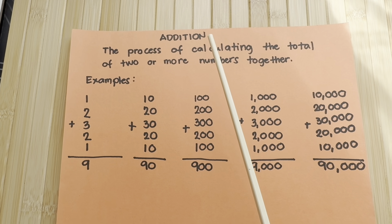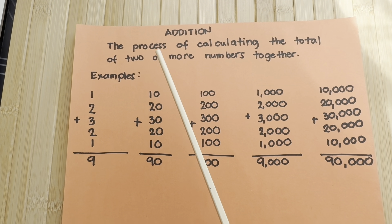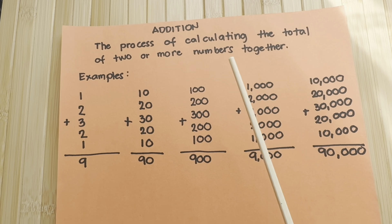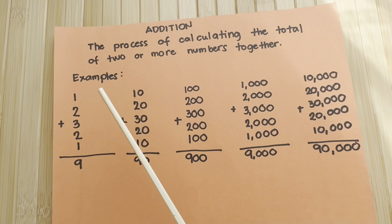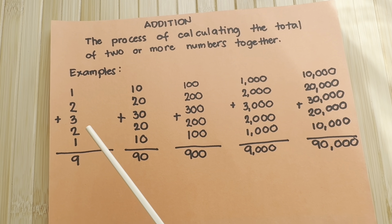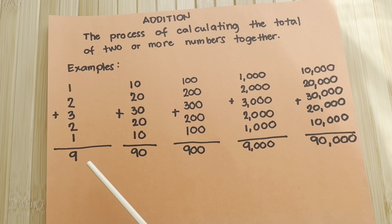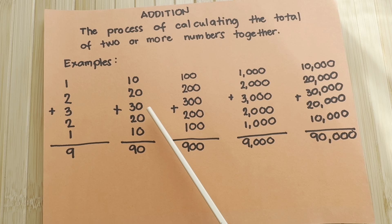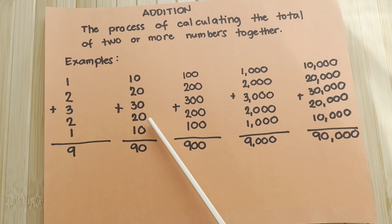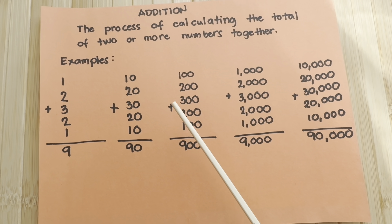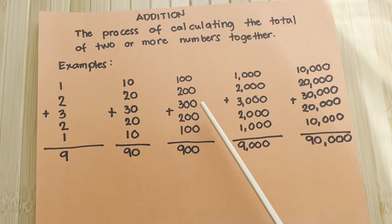Let's do a recap. What is addition? It is the process of calculating the total of two or more numbers together. Here are some examples: 1 plus 2 plus 3 plus 2 plus 1 is equals to 9. 10 plus 20 plus 30 plus 20 plus 10 is equals to 90.